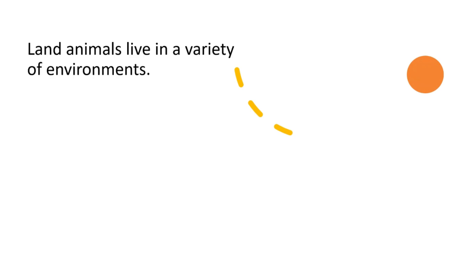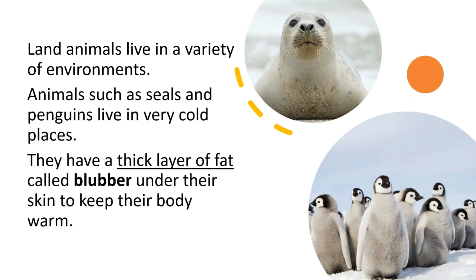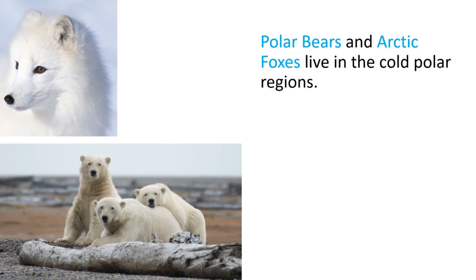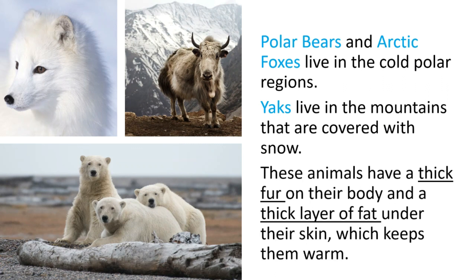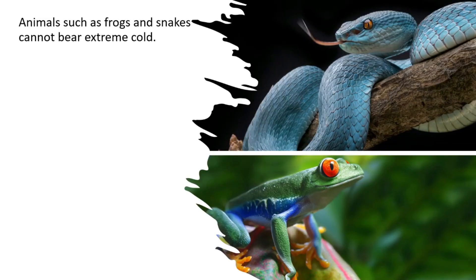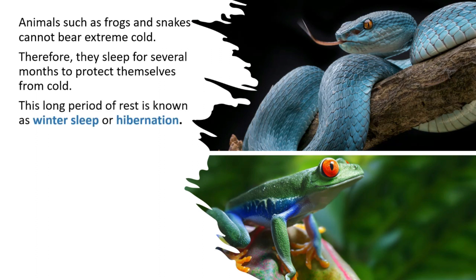Land animals live in a variety of environments. Animals such as seals and penguins live in very cold places. They have a thick layer of fat called blubber under their skin to keep their body warm. Polar bears and arctic foxes live in cold polar regions. Yaks live in the mountains that are covered with snow. These animals have a thick fur on their body and a thick layer of fat under their skin, which keeps them warm. Animals such as frogs and snakes cannot bear extreme cold. Therefore, they sleep for several months to protect themselves from cold. This long period of rest is known as winter sleep or hibernation.